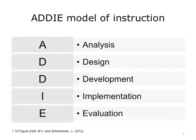There are five stages in the ADDIE model: Analysis, Design, Development, Implementation, and Evaluation. This is the training cycle. The evaluation is used to validate your original analysis. Now let's look at each one of the stages in detail.